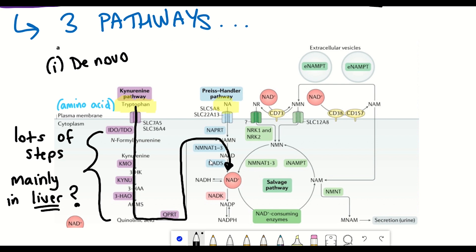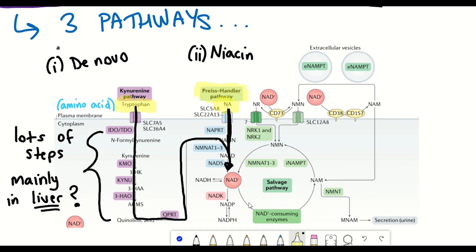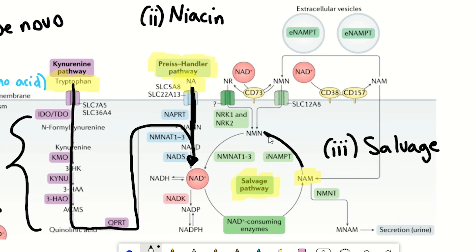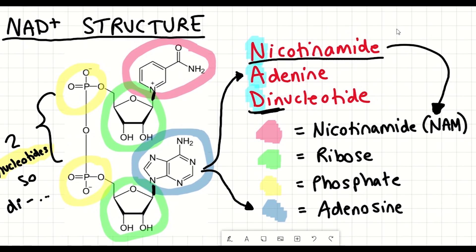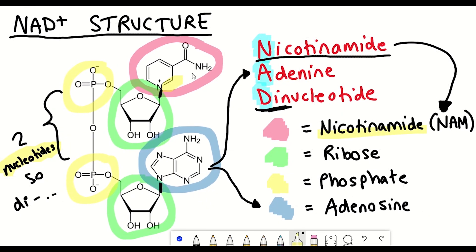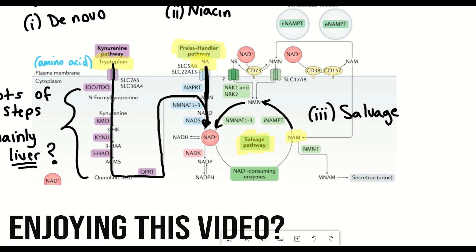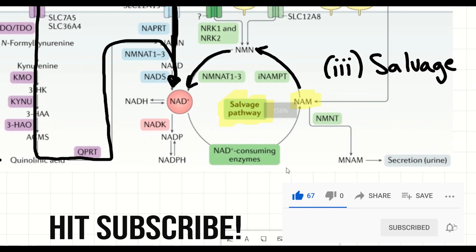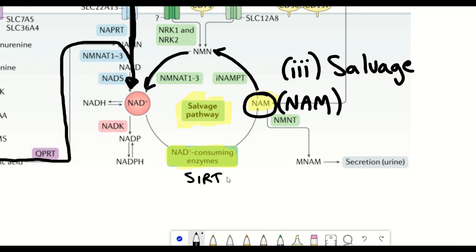The second pathway to NAD+ is from vitamin precursors known as nicotinic acid, or niacin, which gets converted to NAD+ via the Preiss-Handler pathway. The third method is the so-called salvage pathway, which generates NAD+ from nicotinamide (NAM). Nicotinamide is just the moiety group at the end of the NAD+ structure. It's called the salvage pathway because when NAD+ is consumed by enzymes such as sirtuins and PARPs, one of the products is nicotinamide, which can then be converted back into NAD+, effectively rescuing NAD+ levels.